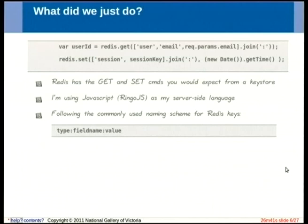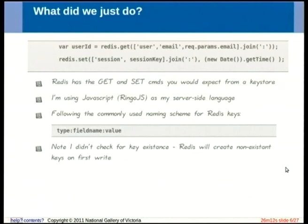In Redis it's just a convention — you can name your keys whatever you like — but a lot of people use this format: value colon value colon value for the key names. In this case I've got the type (user), the field name (email), and the value (the user's email address) as the key to look up whatever piece of data I'm stashing under that key for that user. Note I don't bother checking for key existence — with Redis, basically you write to a key, it'll create it for you if it doesn't exist.